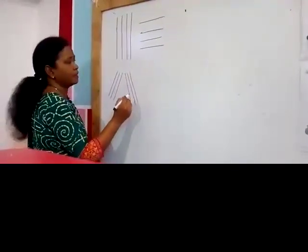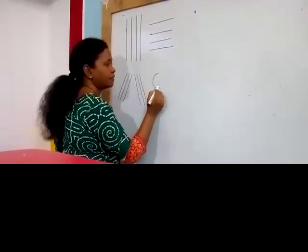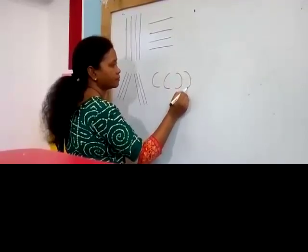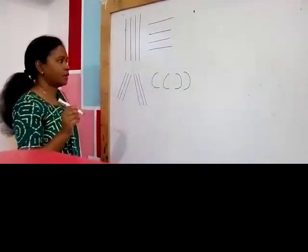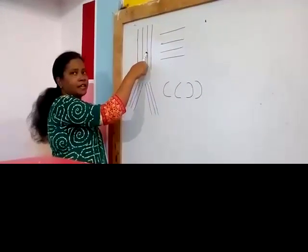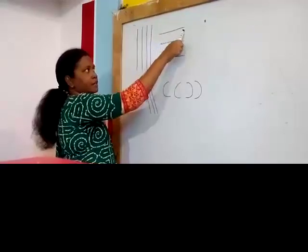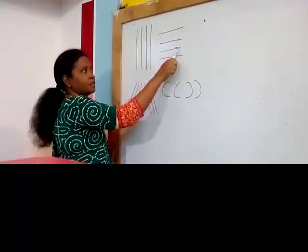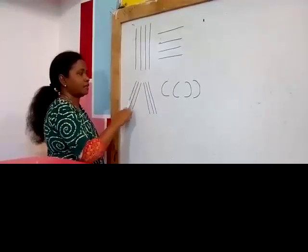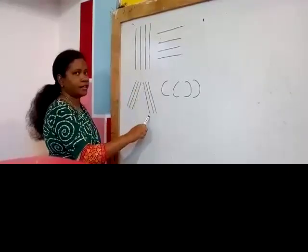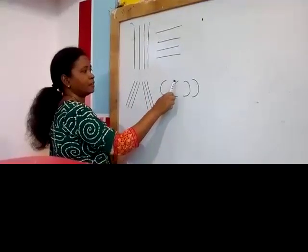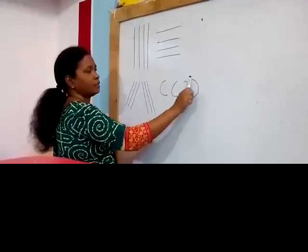Then comes curve line. Curve line. Curve line. Curve line. This is curve line. Now again: standing line, sleeping line, slanting line, curve line.